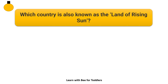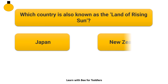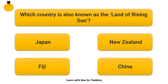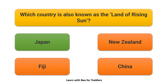Which country is also known as the Land of Rising Sun? Japan. New Zealand. Fiji. China. The answer is Japan.